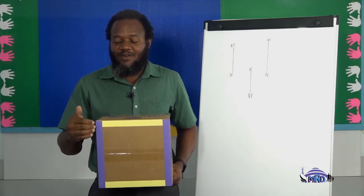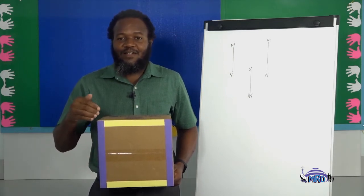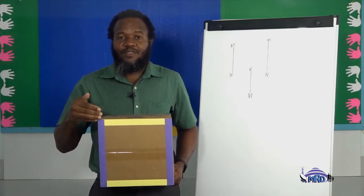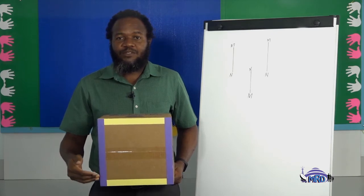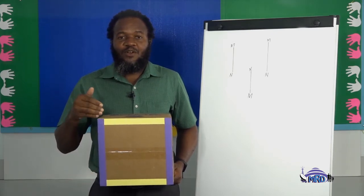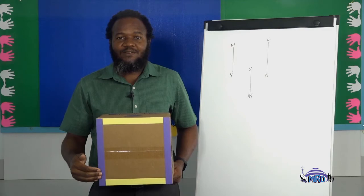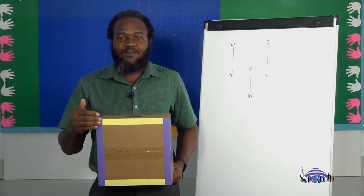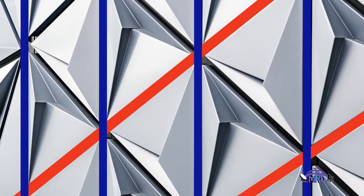Remember, vertical lines are lines that go from top to bottom or bottom to top, from north to south or south to north. From the abstract picture, identify two vertical lines. If you have selected the blue lines, then you are absolutely correct.